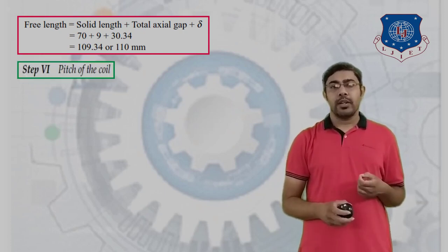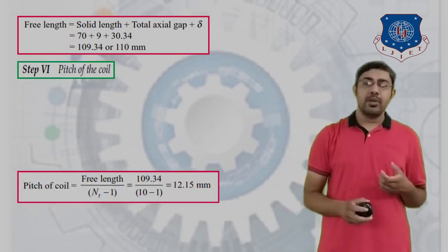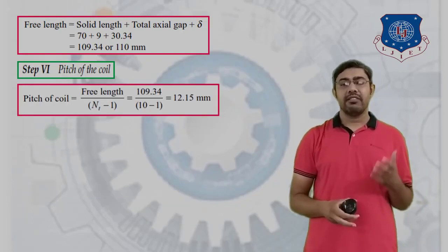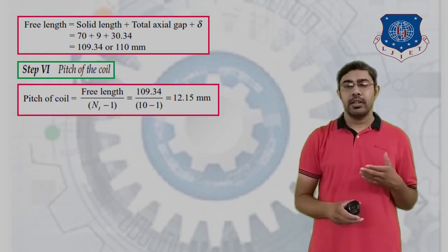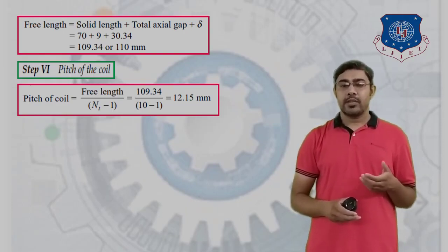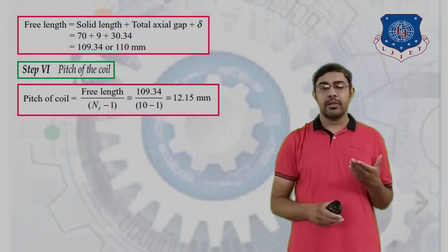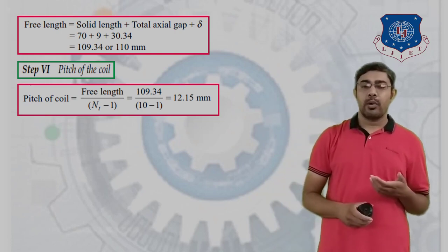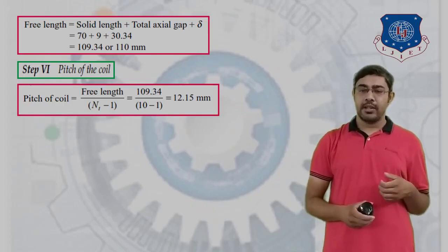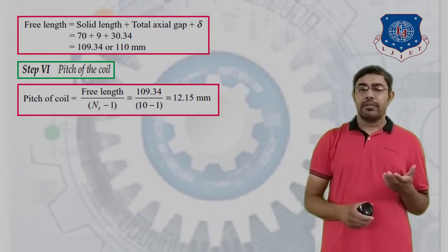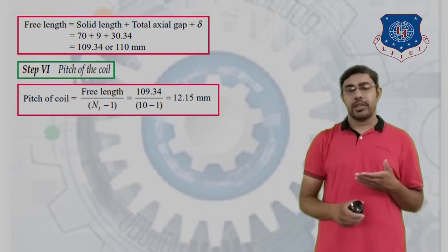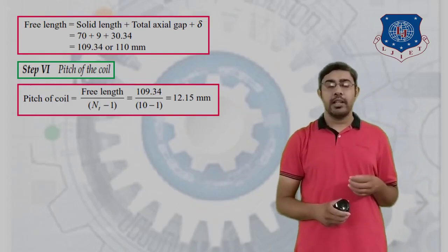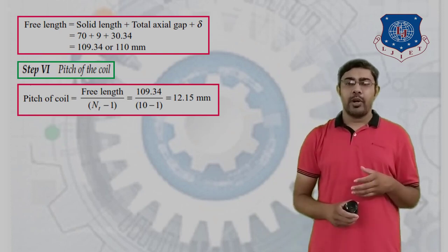Step 6: Calculate the pitch of the coil. Pitch = free length / (N_t − 1) = 109.34 / (10 − 1) = 12.15 mm.